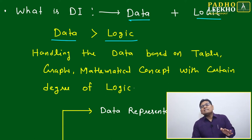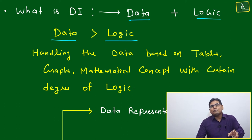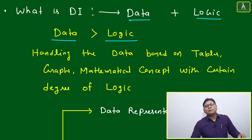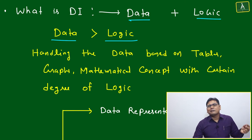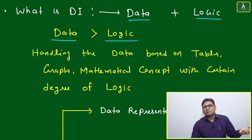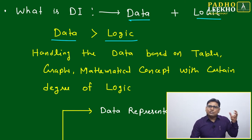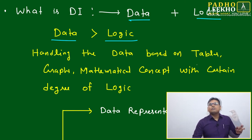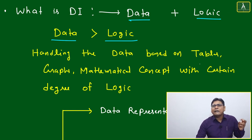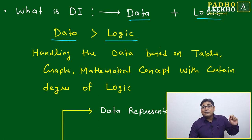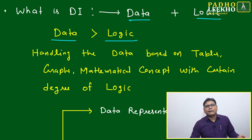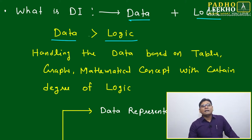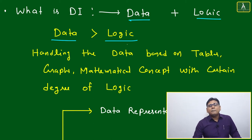When logic involves more than data, the caselet converts into an LR caselet, where less data is given and you have to apply more logic — considering all probable solutions and determining the best solution for a given situation. That is called LR. In DI, data is more than logic.